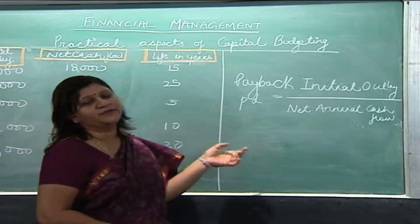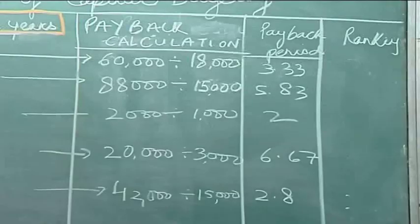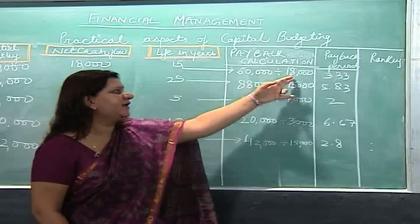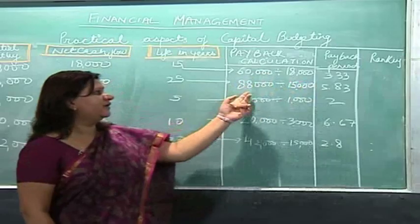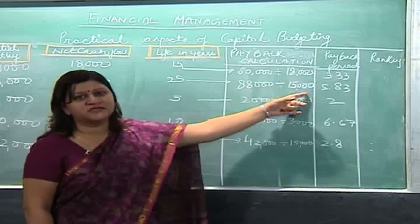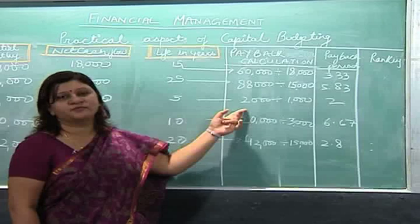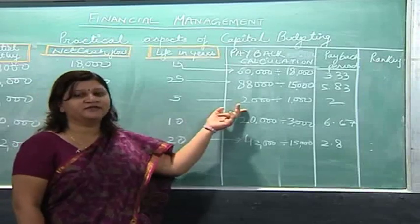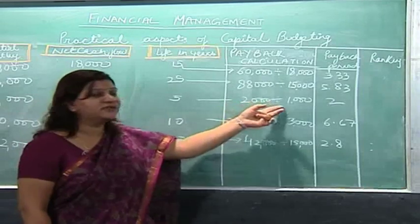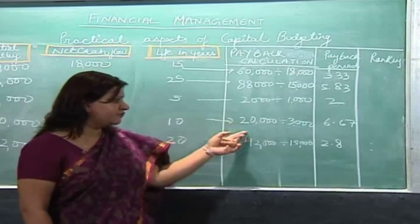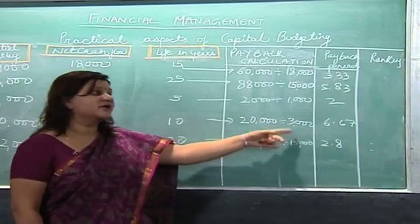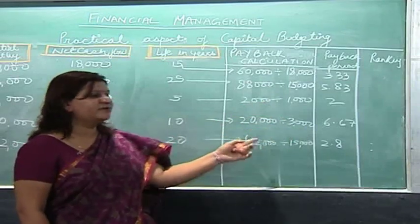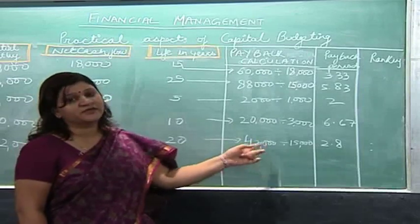We will apply this formula and find out the payback period for each proposal. For proposal A: 60,000 ÷ 18,000 = 3.33 years. For proposal B: 88,000 ÷ 15,000 = 5.83 years. For proposal C: 2,000 ÷ 1,000 = 2 years. For proposal D: 20,000 ÷ 3,000 = 6.67 years. For proposal E: 42,000 ÷ 15,000 = 2.8 years.